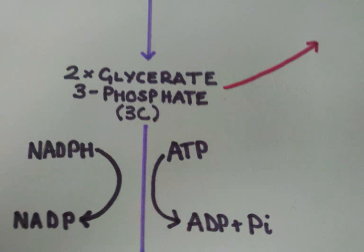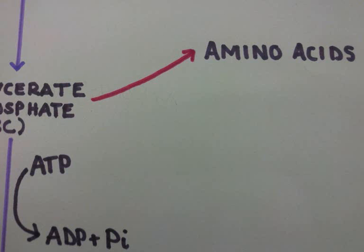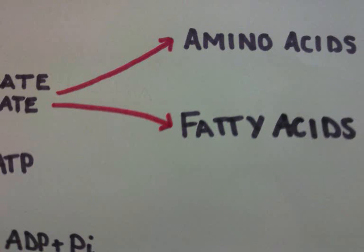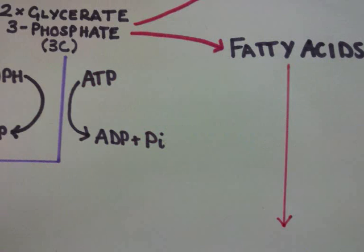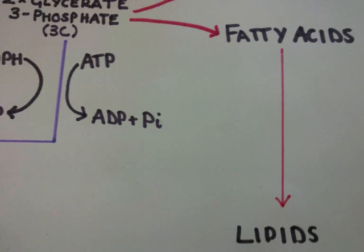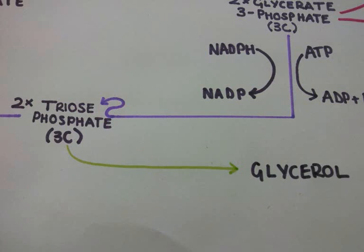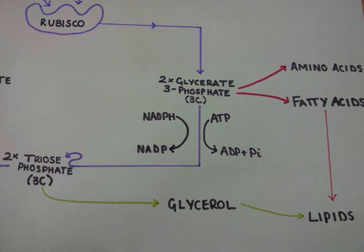How the products of the Calvin cycle are used: Some glycerate 3-phosphate can be used to make amino acids and fatty acids. Triose phosphate can also be converted to glycerol, and this may be combined with fatty acids formed from glycerate 3-phosphate to make lipids.